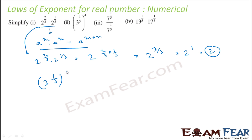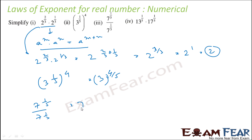Next example: 3 to the power m, raised to the power n — applying the rule this becomes 3 to the power m times n, that is 3 to the power 4 by 5. Then: 7 to the power 1 by 5 divided by 7 to the power 1 by 3. Using the division rule, this is 7 to the power 1 by 5 minus 1 by 3, which equals 7 to the power minus 2 by 15.